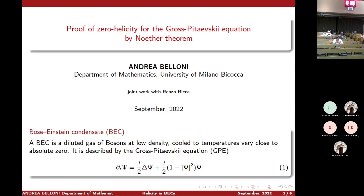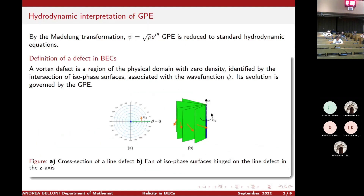I'm going to present the formalization of helicity in the context of vortex defects. We have already seen that under the Madelung transformation we can express the wave function by the density rho and the phase theta to obtain a family of hydrodynamic equations. For this reason, in recent years some techniques and quantities from the classical context have been formalized in the context of Bose-Einstein condensates, and in particular I'm going to talk about helicity in the presence of defects.